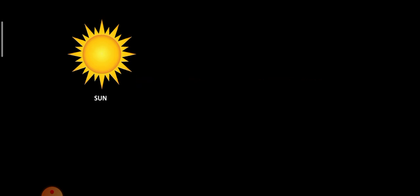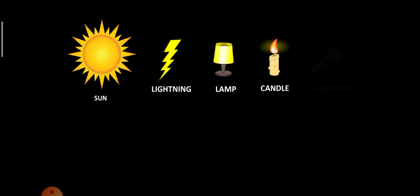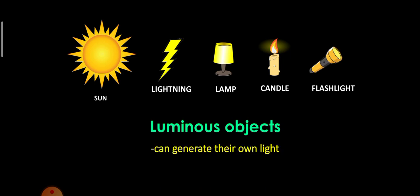The sun is the primary source of light. Without it, our planet will be just like a big ball of ice. But there are other sources of light like lightning, lamp, candle, and flashlight. These objects are called luminous objects. Luminous objects can generate their own light.